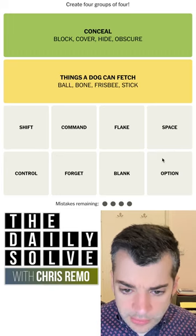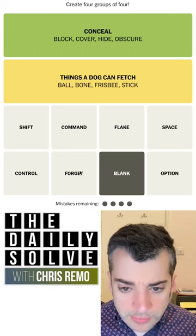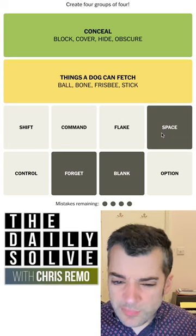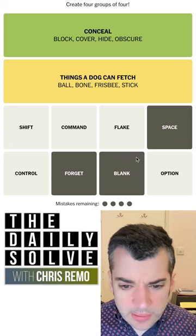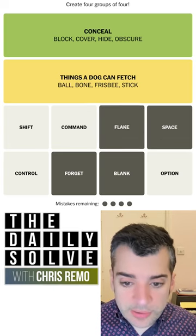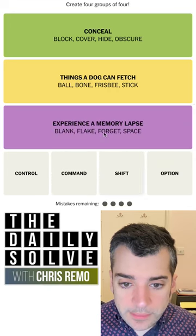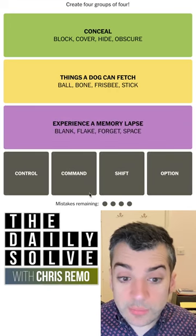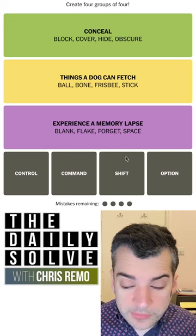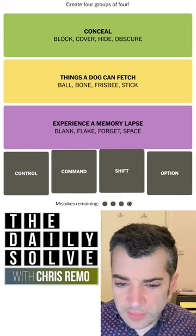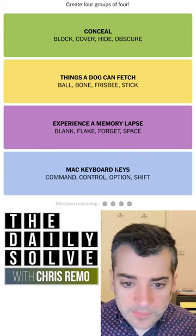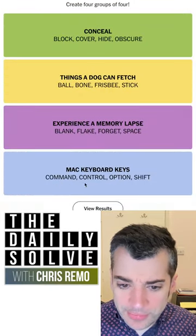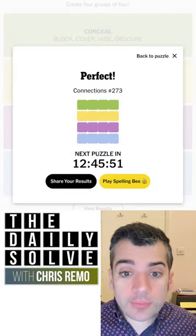What are not computer keys under any circumstances here? Blank, forget. Space. I'm blanking on this. I'm forgetting it. I'm spacing, flaking — I can't remember. That's what this is: experience a memory lapse. And then control, command, shift, option. Okay, suppose maybe spacebar — I think it's just an overlap. Oh, Mac — these are Mac keyboard keys in particular: command, control, option, shift. Interesting. Well, there we go.